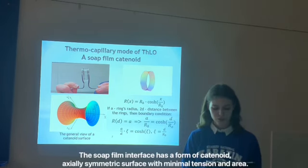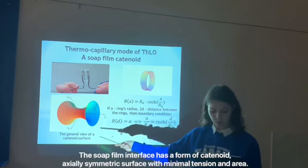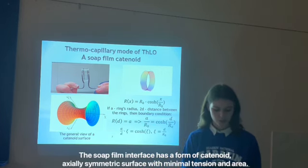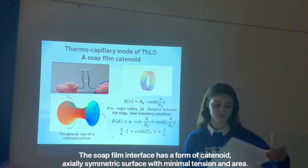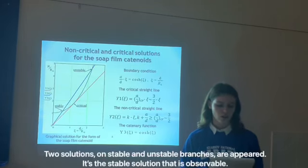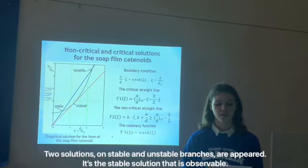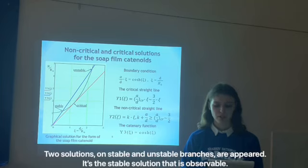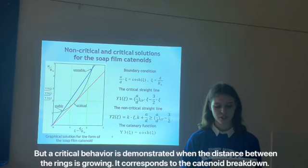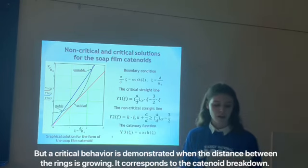The soap film interface has a form of catenoid. Axially symmetric surface with minimal tension and area. Two solutions on stable and unstable branches appear. A stable solution is observed until a critical behavior is reached when the distance between the rings is poor. It corresponds to the catenoid breakdown.